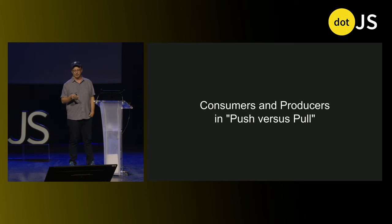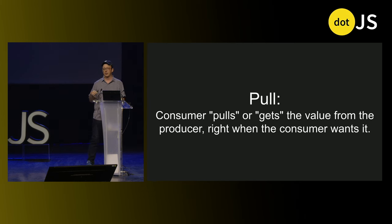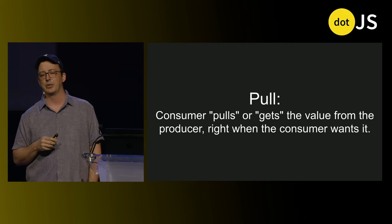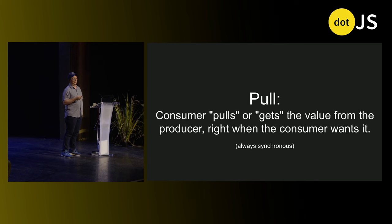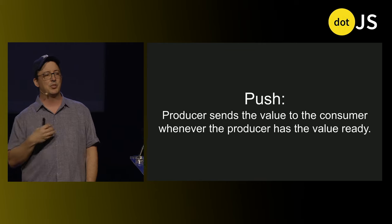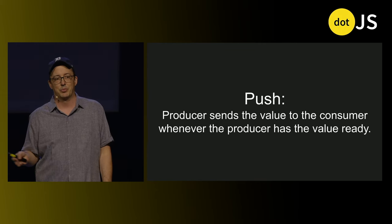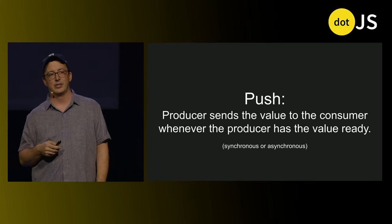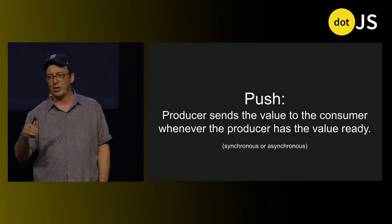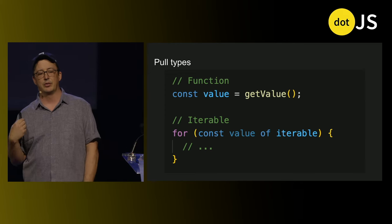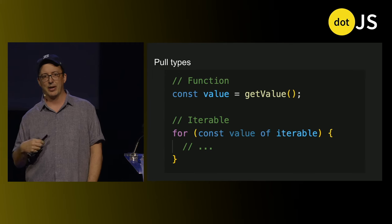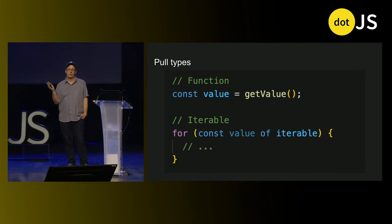Consumers and producers in push versus pull: Pull — the consumer pulls or gets the value right when they need it. It's very convenient, very easy to reason about, we see it all over the place. It's always synchronous, which is one of the reasons it's so easy to reason about. Pull types are functions — you pull a single value out — and iterables, which are very common: things like sets, arrays, maps. You iterate over them.